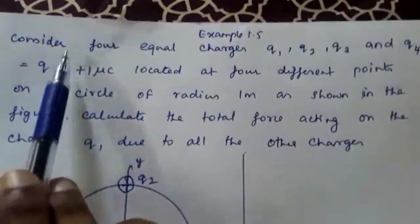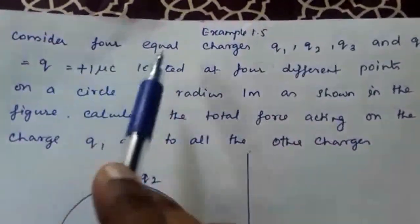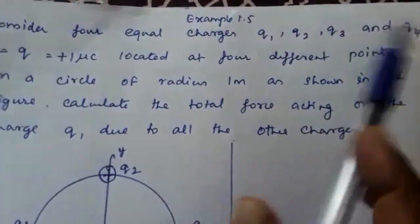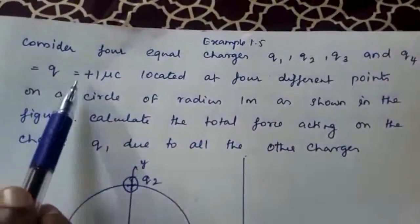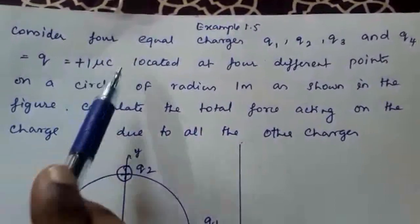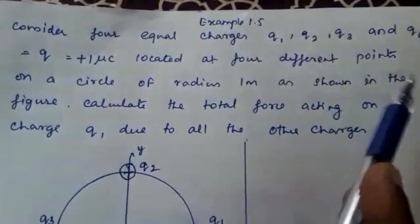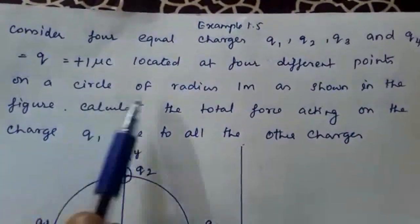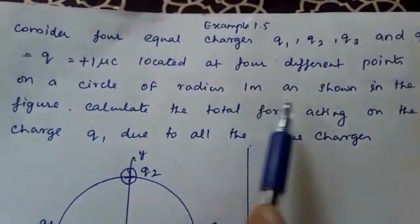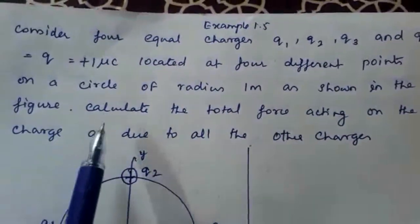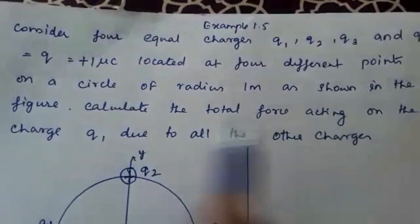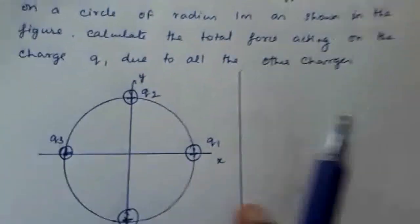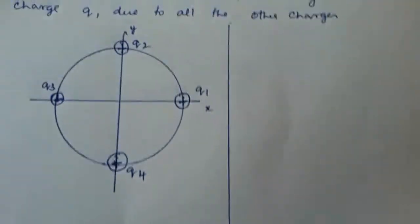Example 1.5. Consider 4 equal charges Q1, Q2, Q3, and Q4 equal to plus 1 microcoulomb, located at 4 different points on a circle of radius 1 meter as shown in the figure. Calculate the total force acting on the charge Q1 due to all other charges.